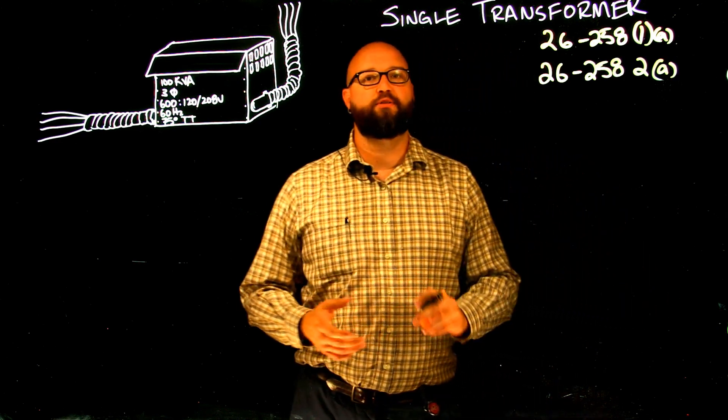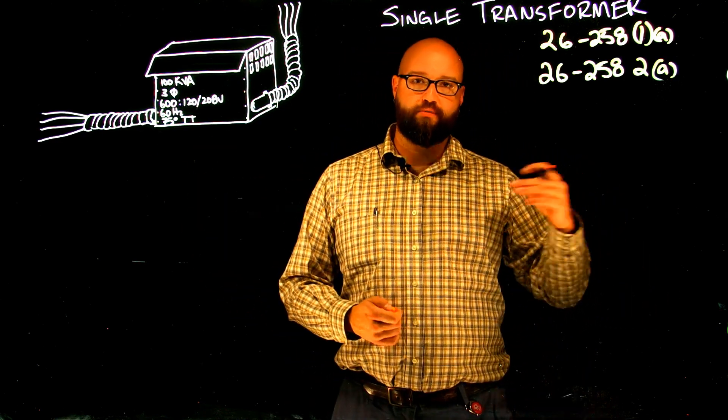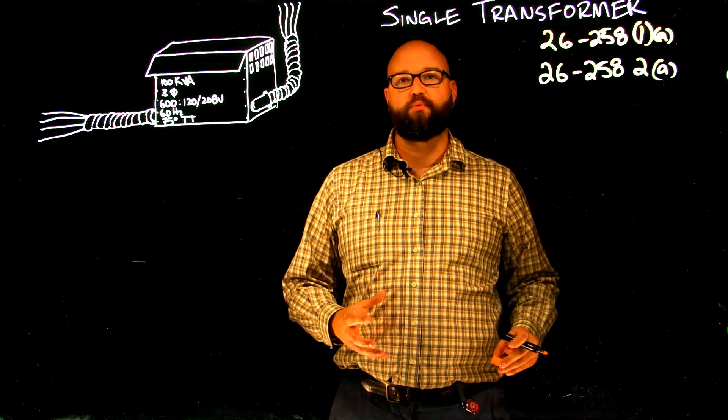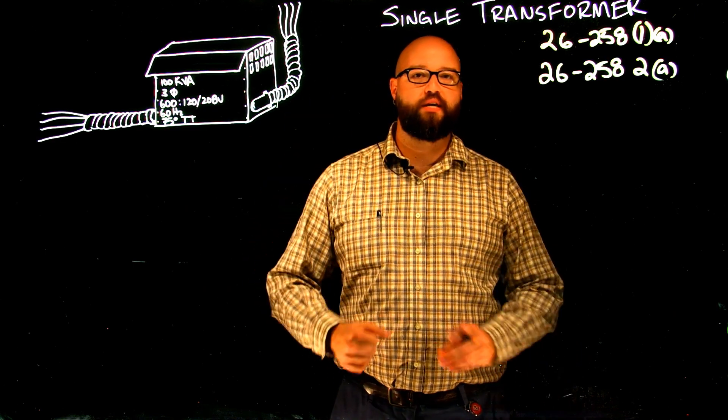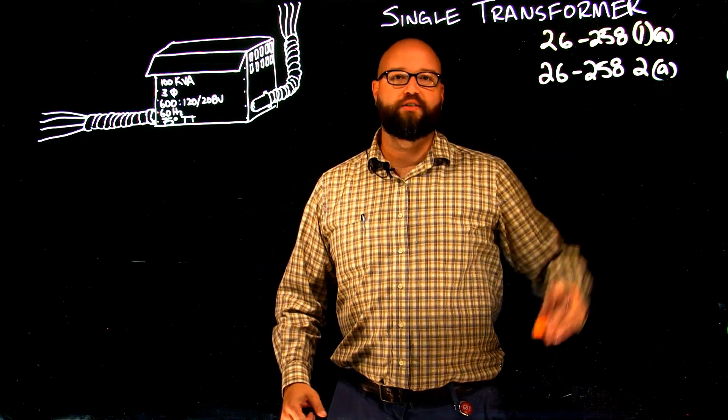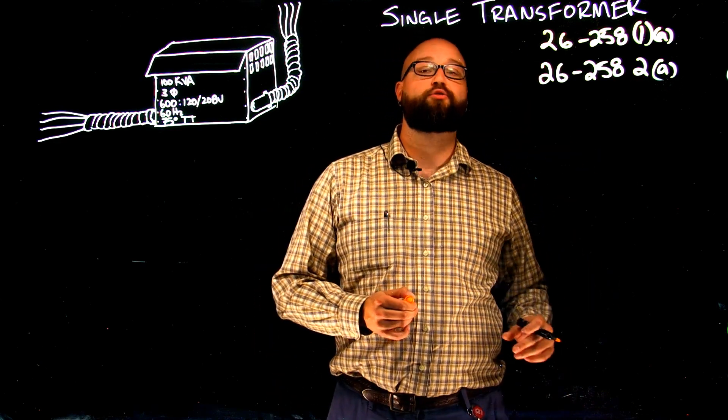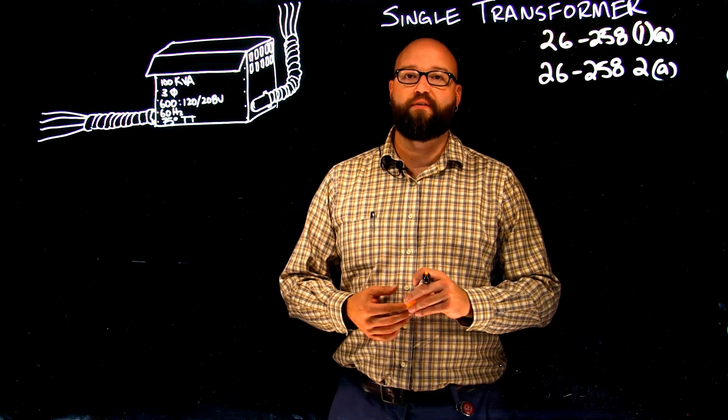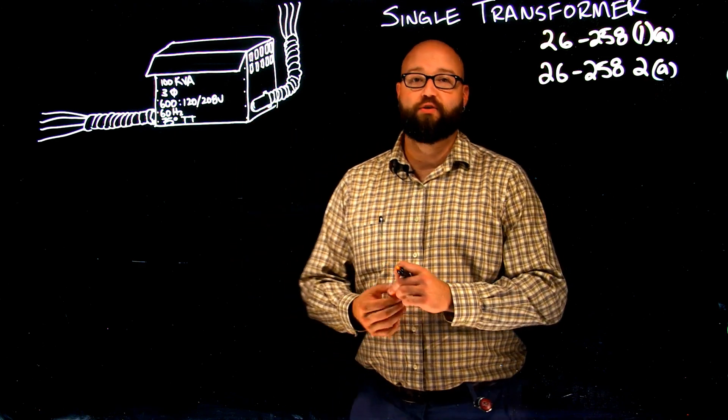we'll take a look at what happens when we have a parallel primary side, and in the subsequent video after that, we'll take a look at what happens when we have parallels on the secondary side of a transformer as well. But for this video, we're just looking at the single conductor calculations for single transformers. So let's get started.